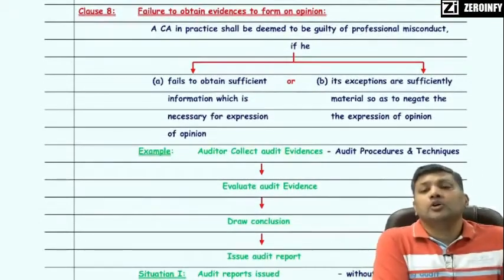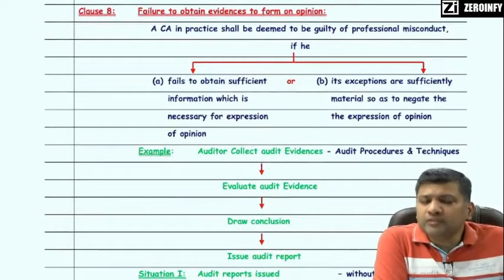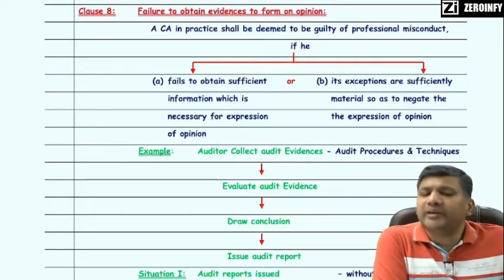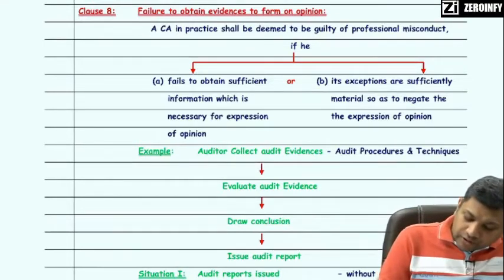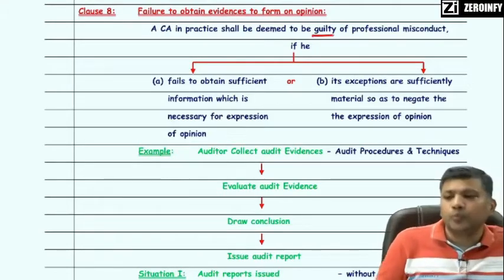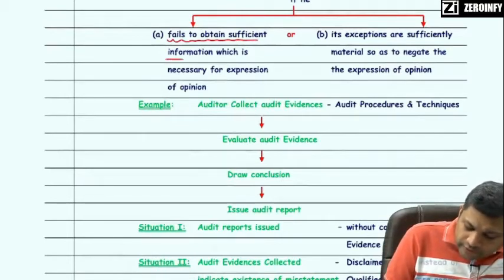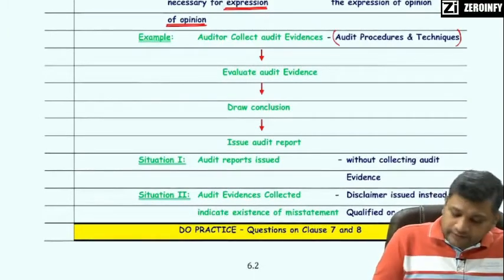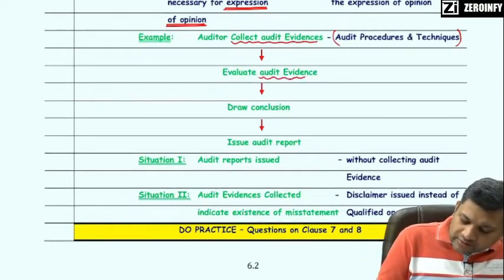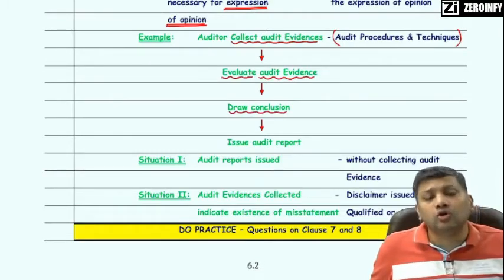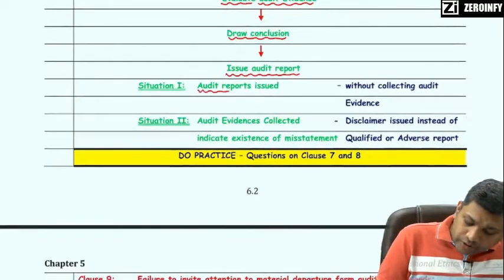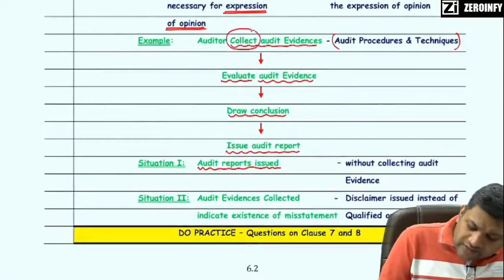Clause 8 provides that if a practicing CA fails to obtain the necessary evidences so as to form an opinion, or collects audit evidence but issues a disclaimer, he will be guilty of professional misconduct. A practicing CA shall be deemed guilty if he fails to obtain sufficient information necessary for expression of opinion. In general, an auditor through audit procedures collects audit evidences, evaluates them, draws conclusions, and expresses those conclusions in the form of an audit report. Case 1: the practicing CA issues the audit report without audit evidences being collected.